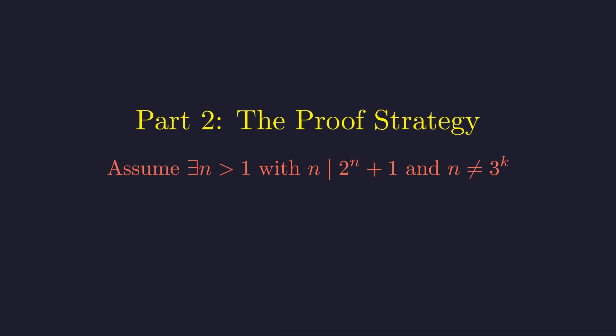We'll assume for contradiction that there exists a solution n greater than 1 that is not a power of 3. Our goal is to show this leads to an impossibility.